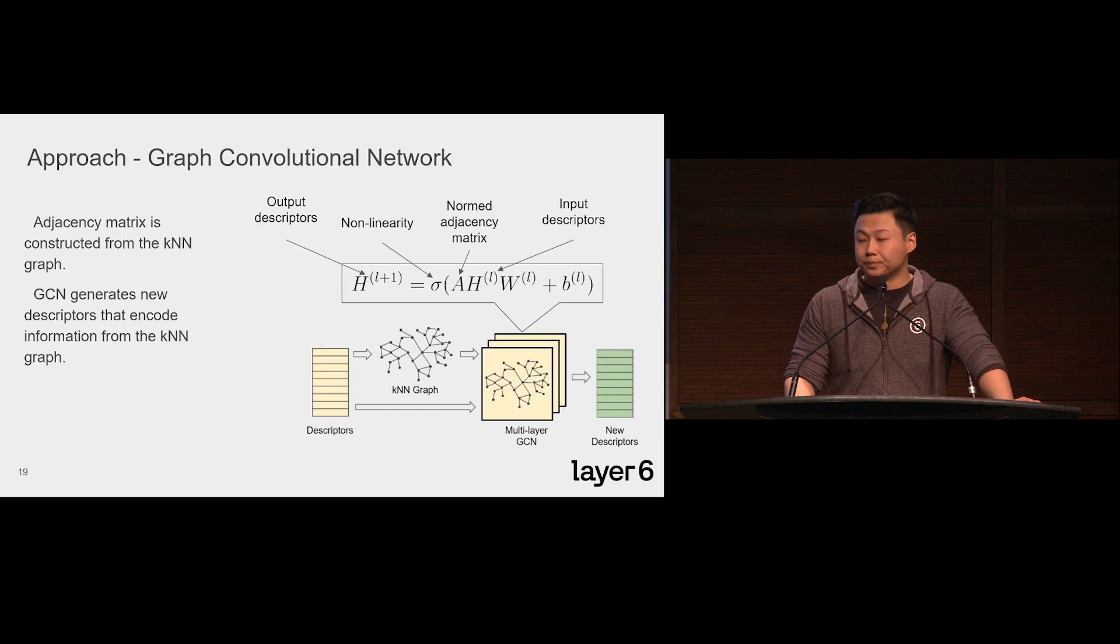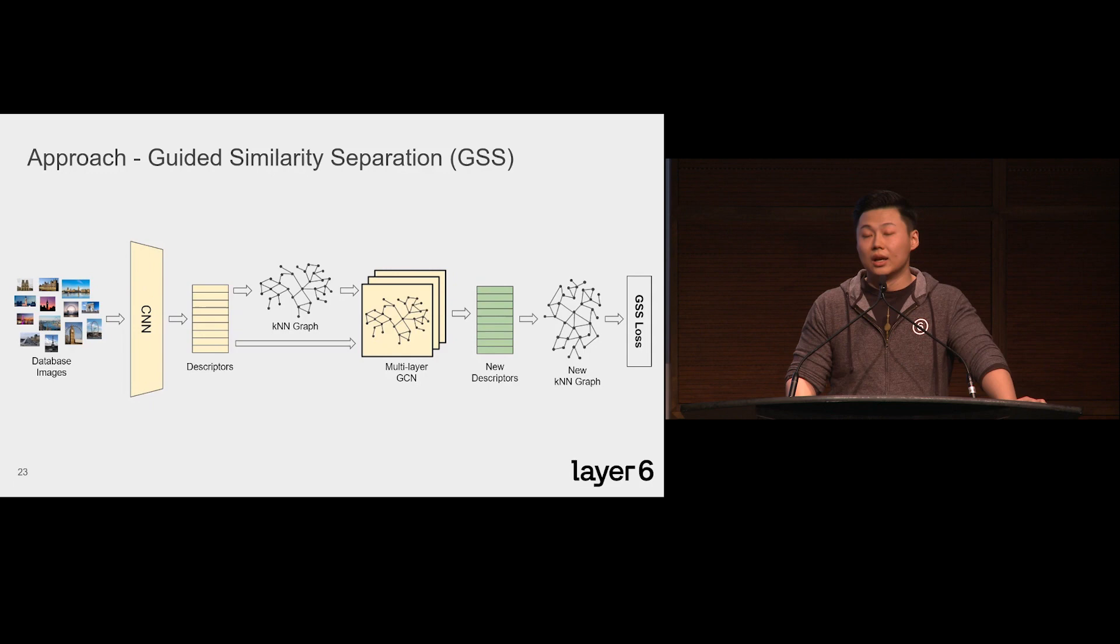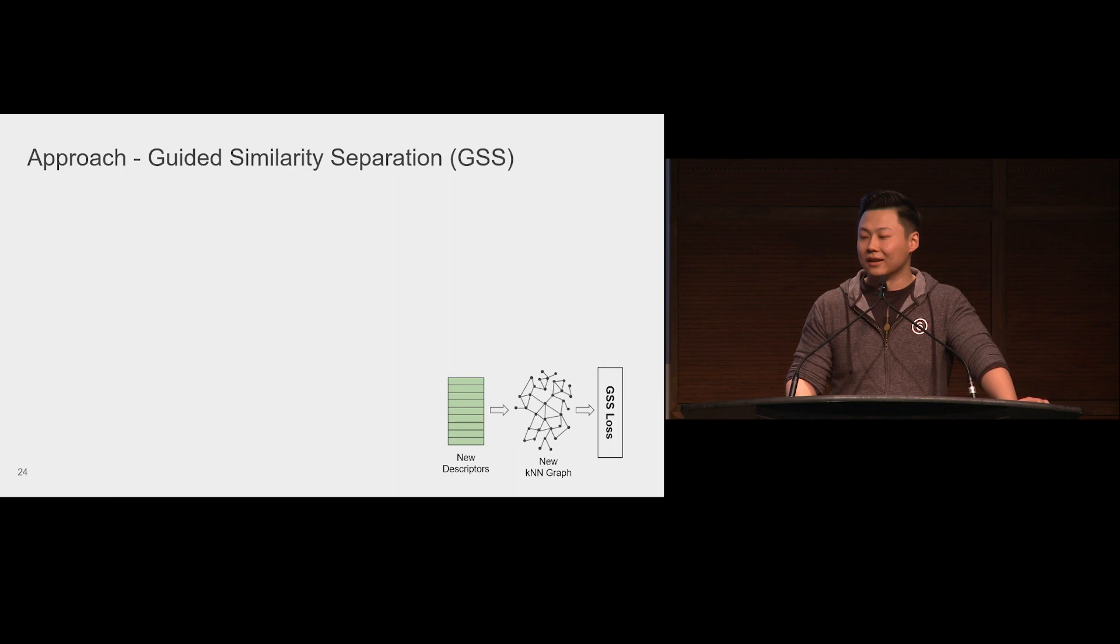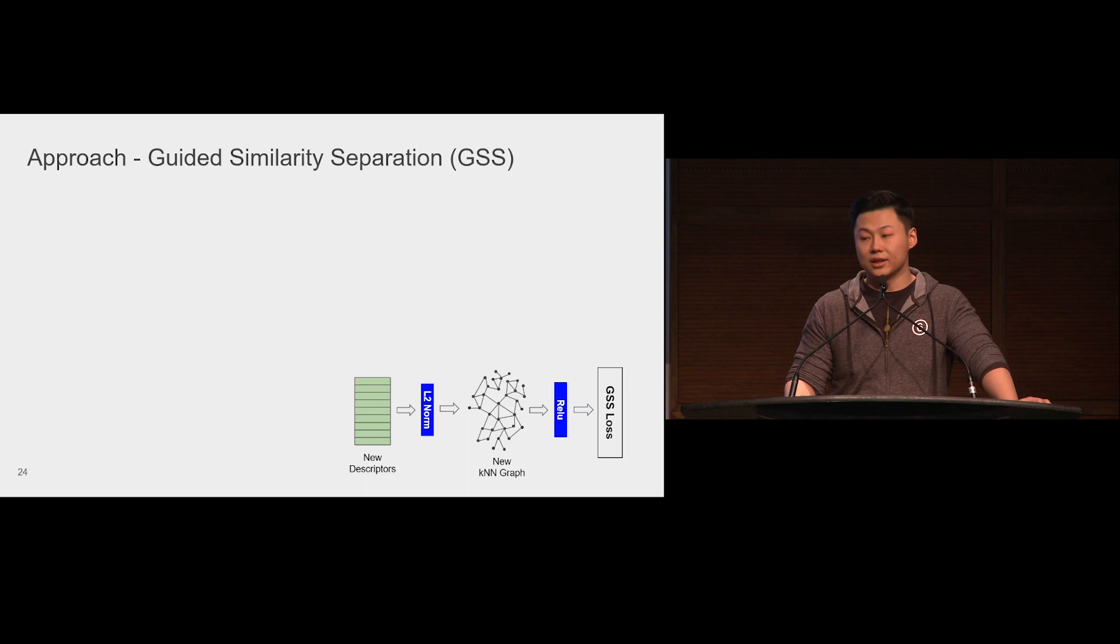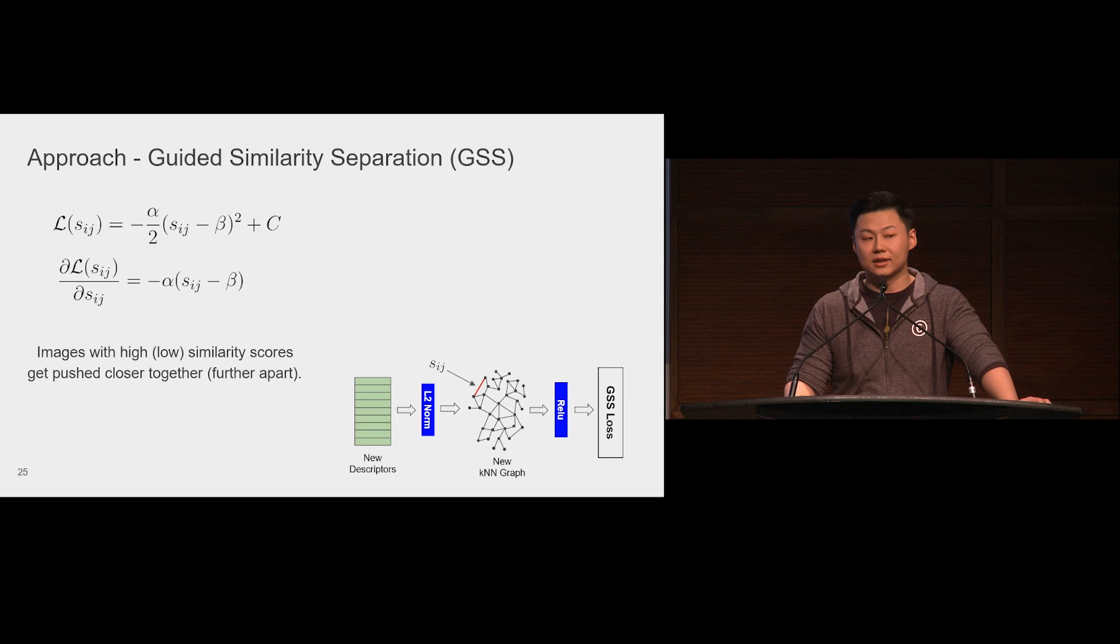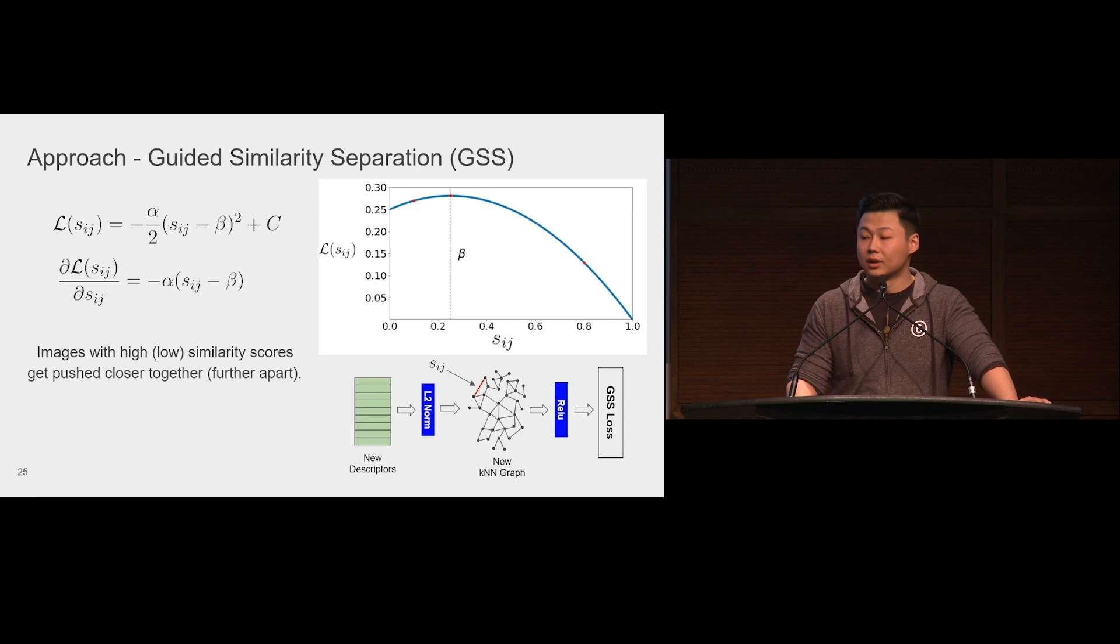To train the model, a new KNN graph is built from the output descriptor from the GCN, and the guided similarity separation loss is applied on the graph edges, which are pairwise similarity scores, noted as S_ij. The idea behind this loss is we want to push those images with high similarity scores closer together, and those images with low similarity scores further apart. So we design the loss as a quadratic function, where the parameter beta controls the threshold that separates high and low similarity scores.